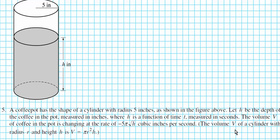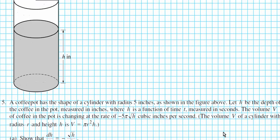Question 5 is as follows. It reads: a coffee pot has the shape of a cylinder with a radius of 5 inches. Let h be the depth of the coffee measured in inches, where h is a function of time t measured in seconds. The volume v of coffee in the pot is changing at negative 5π√h cubic inches per second. The volume v of the cylinder with radius r and height h is given by v = πr²h.